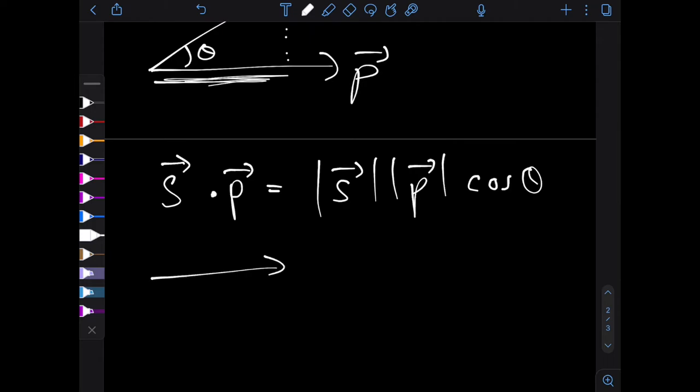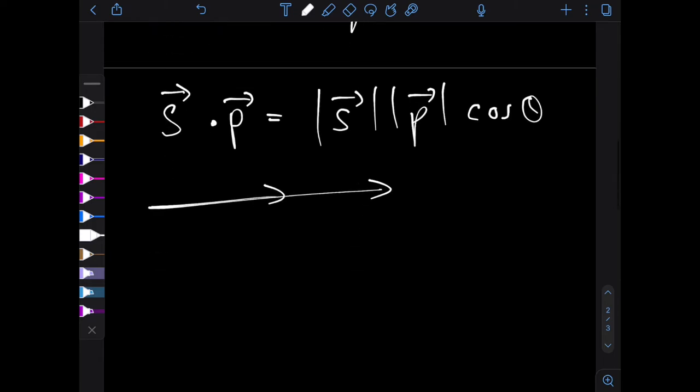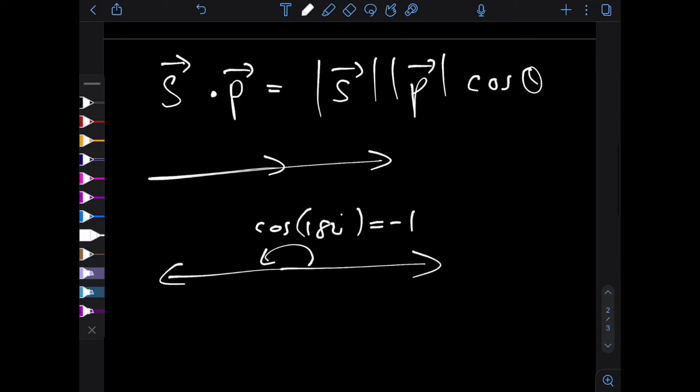So if s and p are perfectly aligned, your dot product is maximized. If s and p are perfectly anti-aligned, because they're 180 degrees apart, cosine of that angle is negative one, we get the lowest possible value.